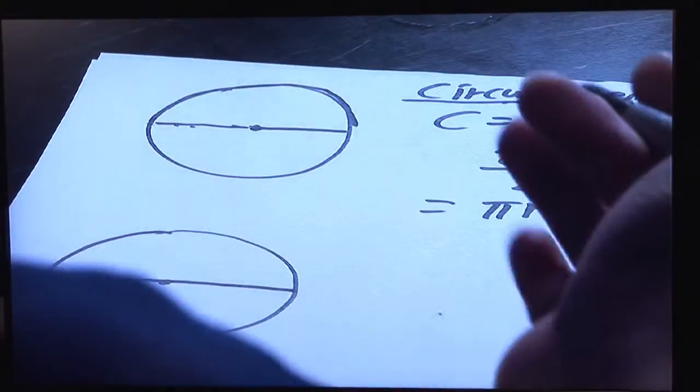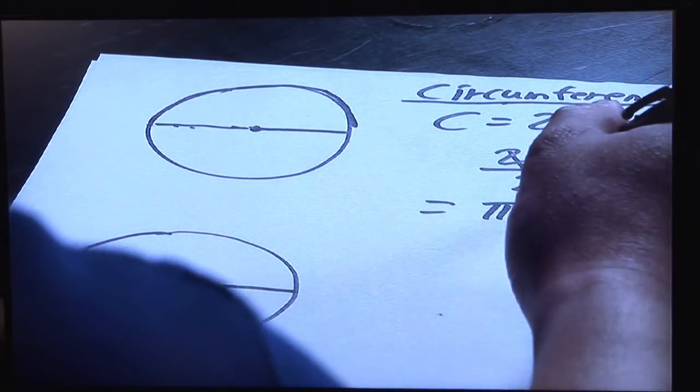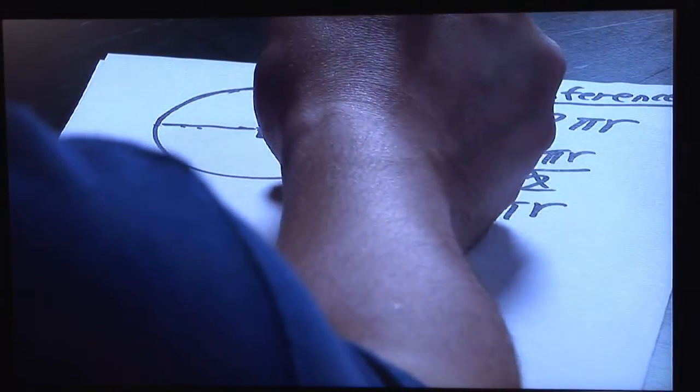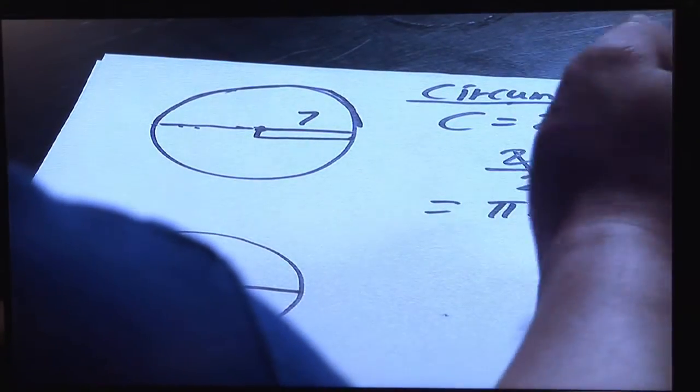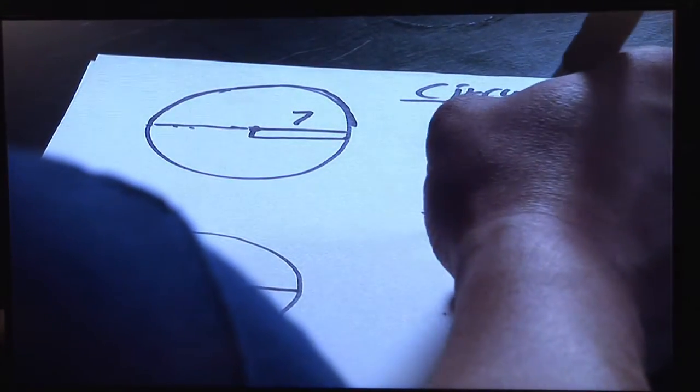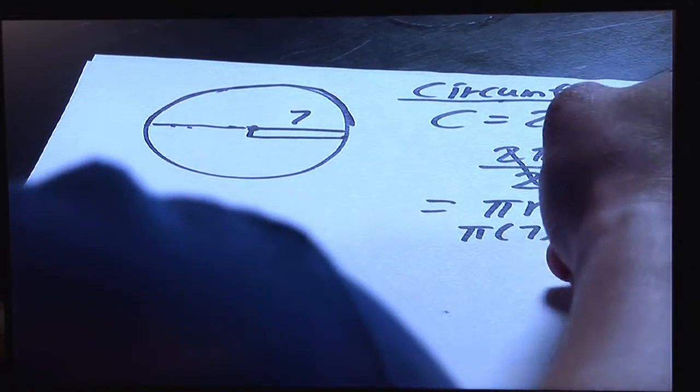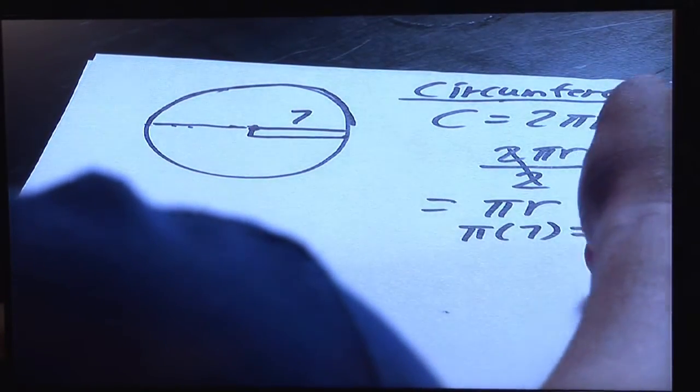So the formula for the circumference of a semicircle is π times r, which is the radius of the original circle. Let's say you were given that the radius of a circle was 7. Then all you would need to do is plug in 7 where the r is, and you'll have π times 7, or as it's more widely written, 7π.